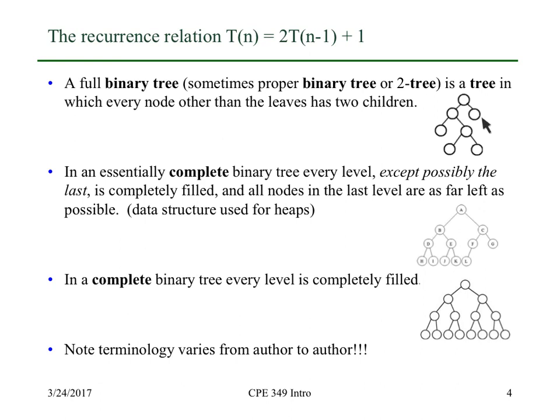There can be different holes at different levels. In an essentially complete binary tree, every level except possibly the last is completely filled in, so it's going to be full. In addition, all the nodes in the last level are as far left as possible. This is the data structure you've seen in heaps. All the levels are filled in, and all the nodes in the last level are as far left as possible in the tree.